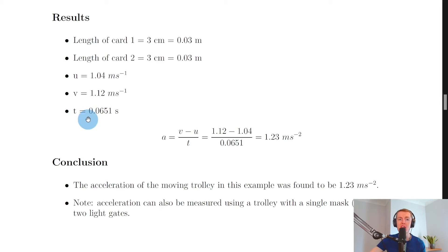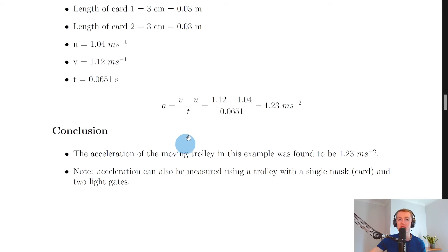And the total time for the whole mass to cut through the light gate was 0.0651 seconds. So we could then sub this into our acceleration equation: a equals v minus u over t, which gives us 1.12 minus 1.04 divided by 0.0651, and if you put that into your calculator you should get an answer of 1.23 meters per second squared.